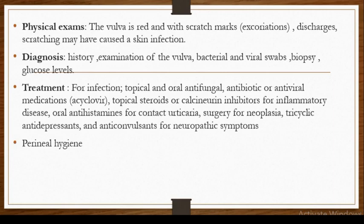If it is due to an inflammatory disease, we may want to give topical steroids. If it is due to contact urticaria, we give oral antihistamines to help reduce the itchiness. We may reserve surgery for the neoplasias, and we may also give tricyclic antidepressants such as duloxetine and anticonvulsants such as pregabalin for neuropathic symptoms. It is very important to encourage young pre-pubertal and post-pubertal ladies to ensure good perineal hygiene — educating them on how to clean the vulva, wiping front to back after bowel movement and after voiding.